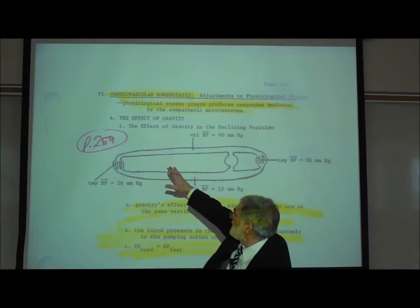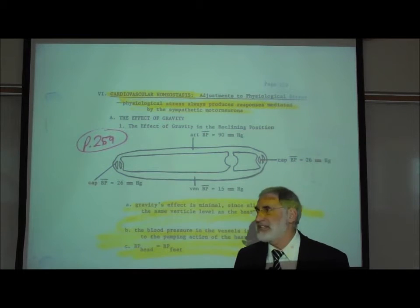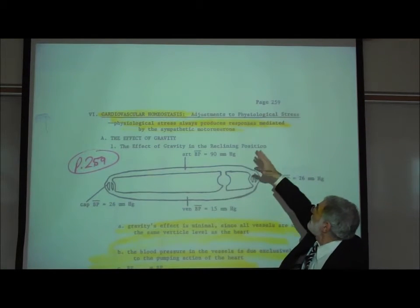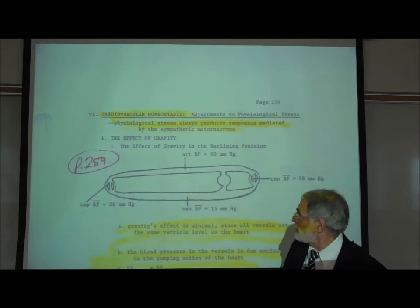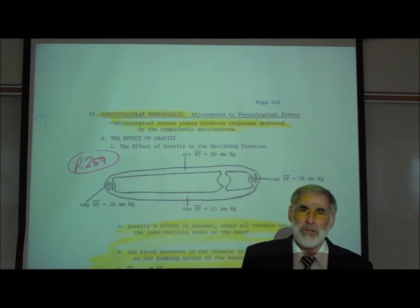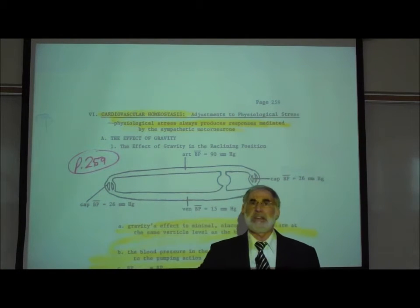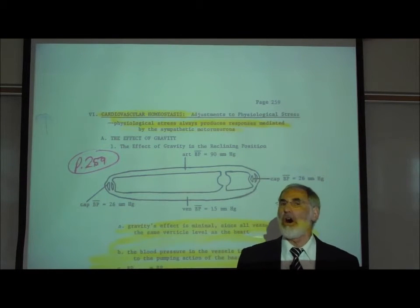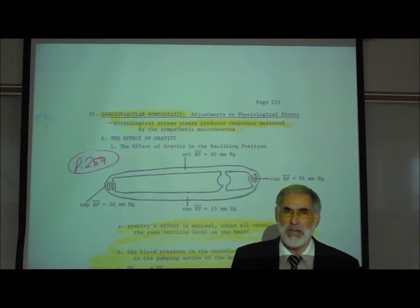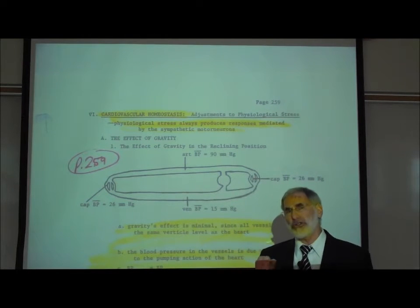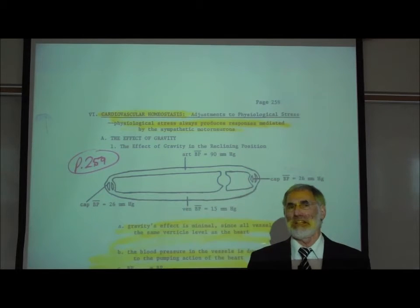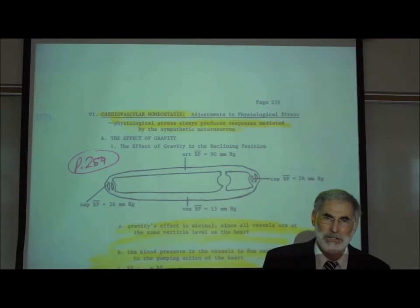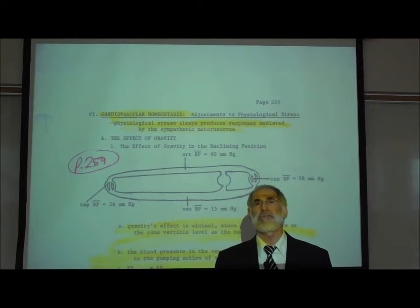This is page 259, and we're now going to examine cardiovascular homeostasis, adjustments to physiological stress. Anytime there is physiological stress, the homeostatic response will involve sympathetic autonomic motor neurons. The most important and most common physiological stress to our body, specifically the cardiovascular system, is the effect of gravity.